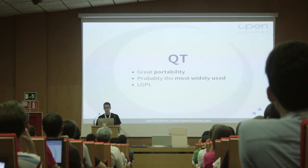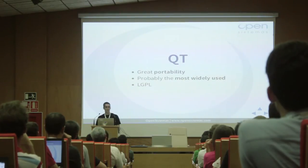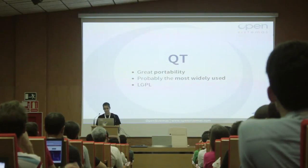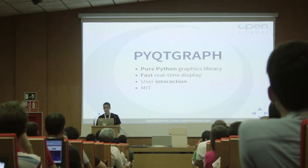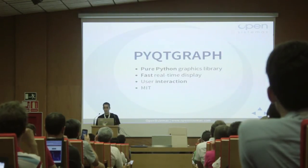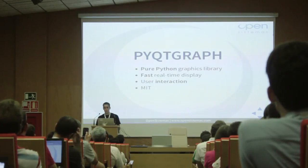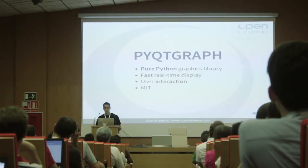How did we do this? We used Qt — because of its great portability and because it's probably the most widely used framework available out there. It's LGPL, which is also very good. But for me the most important part is PyQtGraph, which I think is a not-so-well-known package, written in pure Python, and meant to be used for fast real-time display. It implements out of the box interaction with the graphs it can generate — so you can zoom in, zoom out, or pan your graph, and everything is already implemented in PyQtGraph. So if you want to do some kind of real-time visualization, you should have a look at this project.